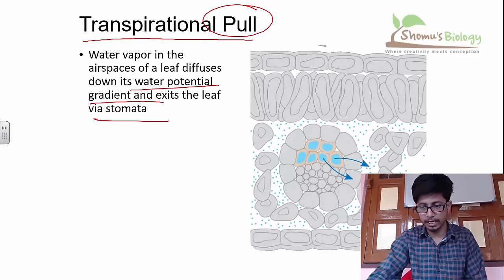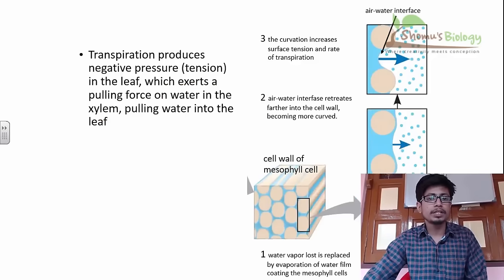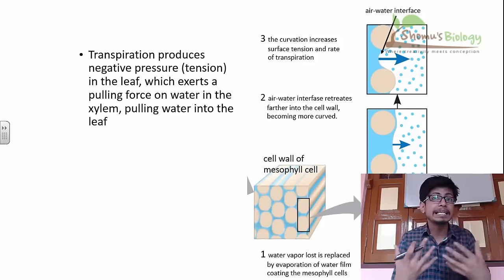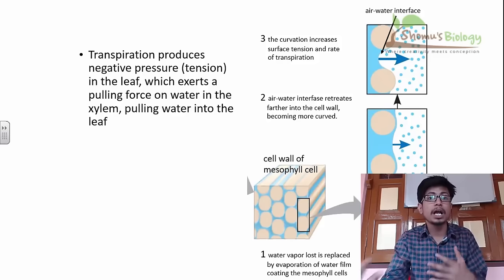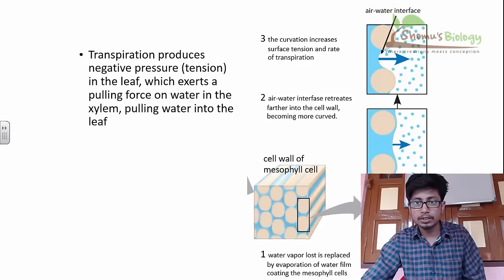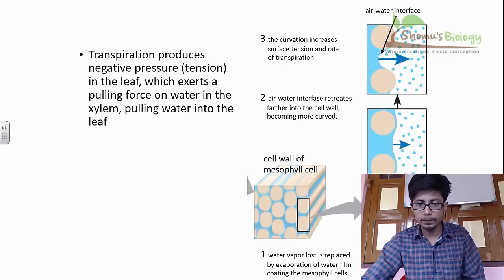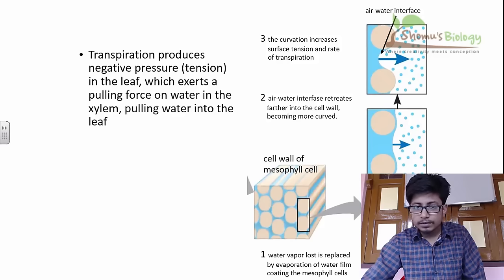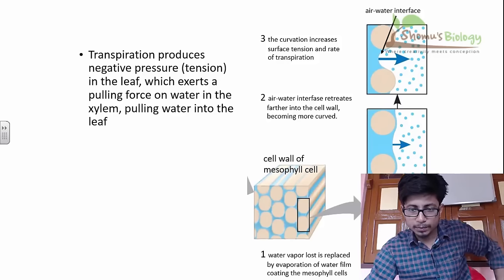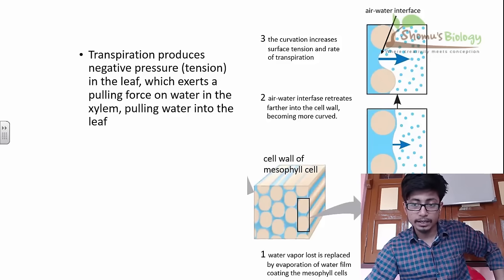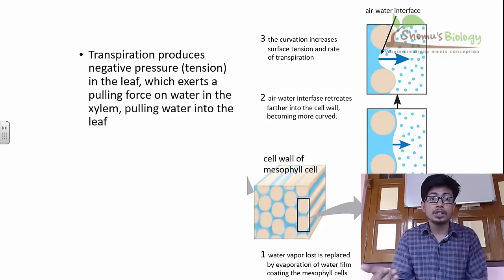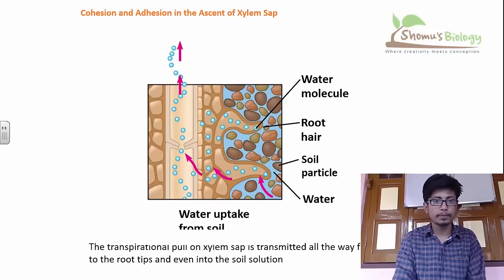Transpiration produces negative pressure, called tension, in the leaves. Due to this negative pressure, the plant leaves try to minimize the pressure by pulling water forward. These are the air-water interfaces — as water vapor is lost, it is replaced. Looking at the complete structure, these are the water films and the mesophyll cells; water is evaporating, and due to that negative force that builds up, a chain of water starts coming to the top.